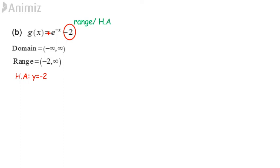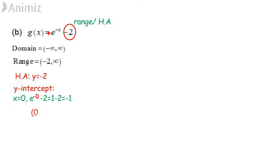Then find the y-intercept. Substitute x equals 0 into the function: e raised to the power of negative 0, minus 2, is equal to 1 minus 2, which is negative 1. So the graph passes through (0, negative 1).